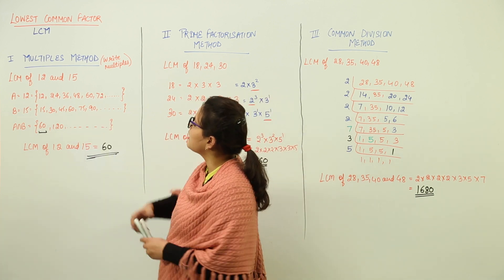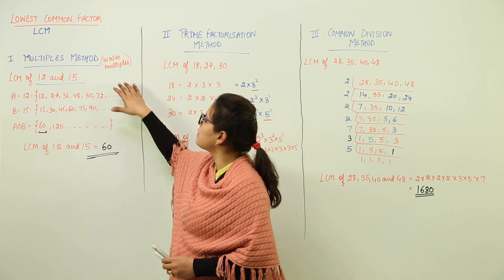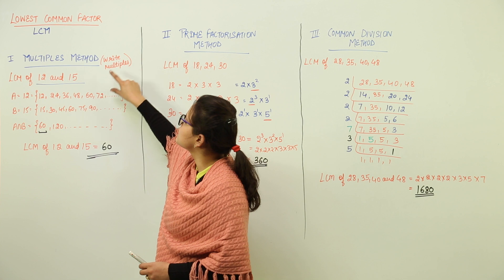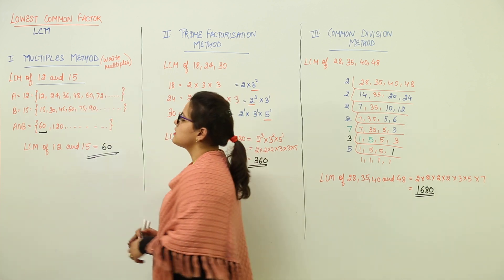In this method, I have taken the example of finding out the LCM of 12 and 15. So what happens here is we write the multiples of each number in form of sets.